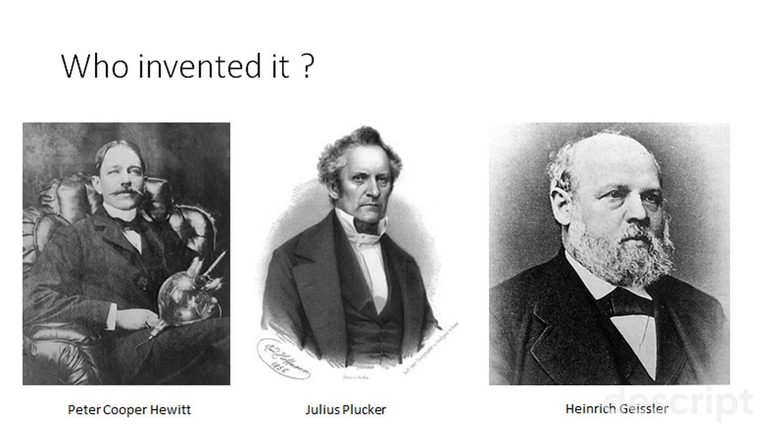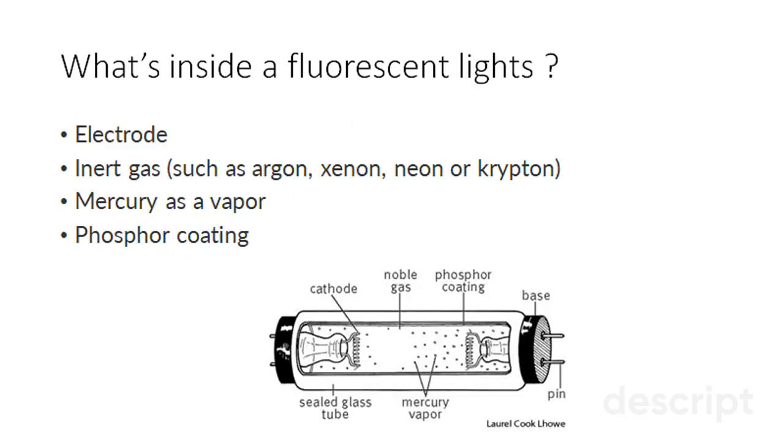These lamps work in much the same way today with a few modifications, of course. There are four main components to a fluorescent light. The first is an electrode.